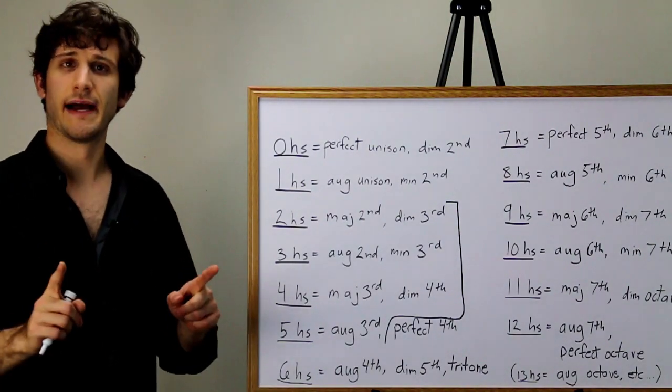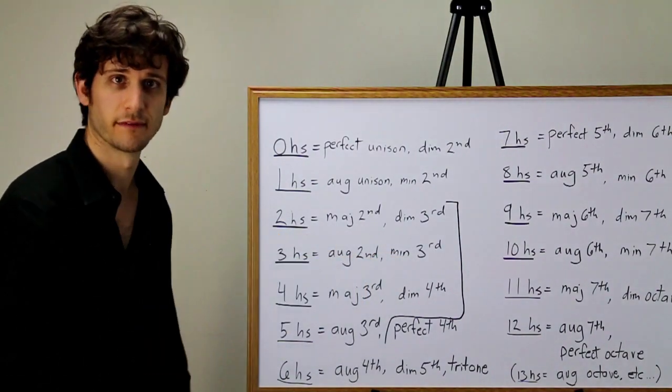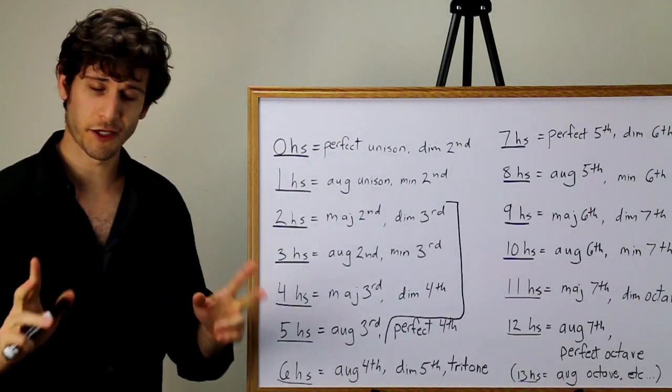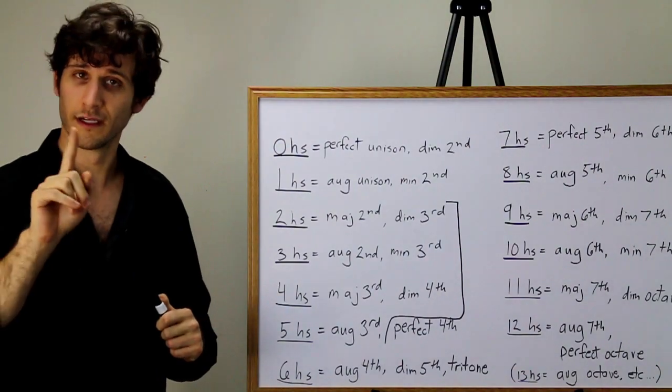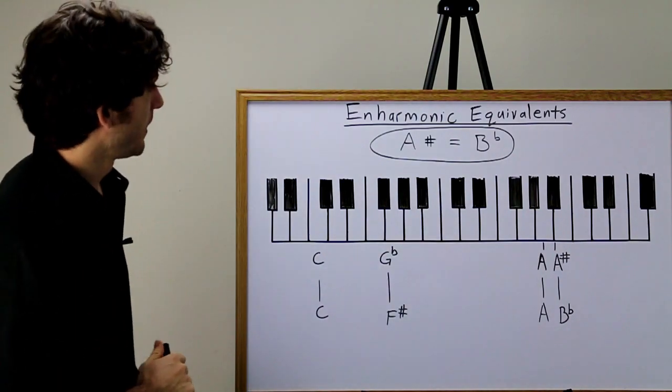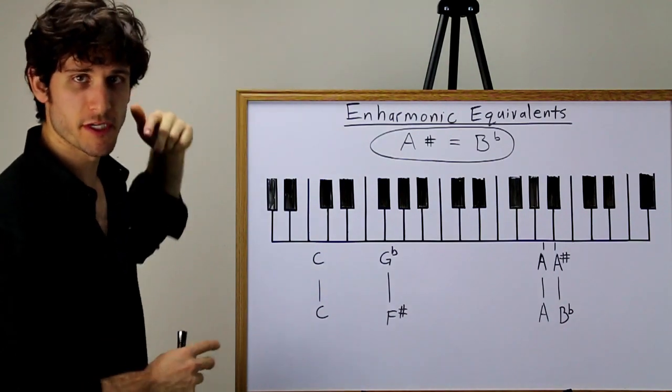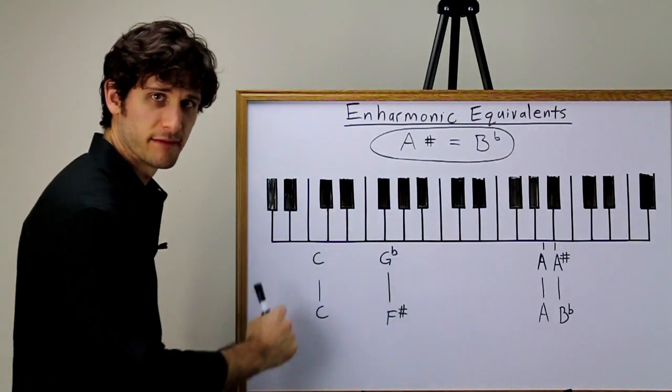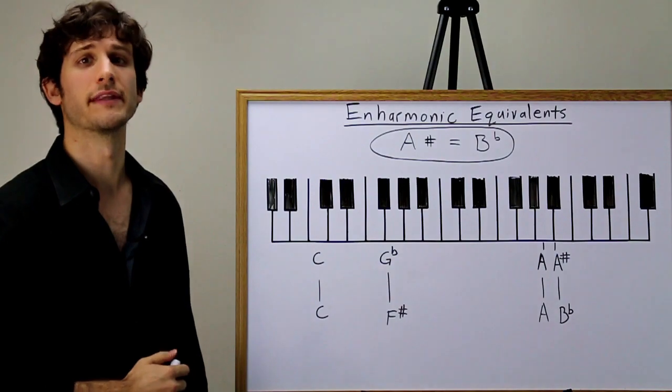The question is, how do you know when to call something, for example, an augmented second or a minor third? How do you know which one is right? The answer is, it depends on how you spell it. And I know that sounds crazy. But remember when I introduced the musical alphabet and I said that the black notes all have two names? Well, let's expand that concept. A-sharp is the same thing as B-flat. There's a name for this. A-sharp and B-flat are said to be enharmonic equivalents. It just means that two notes share the same pitch, but they're spelled differently.